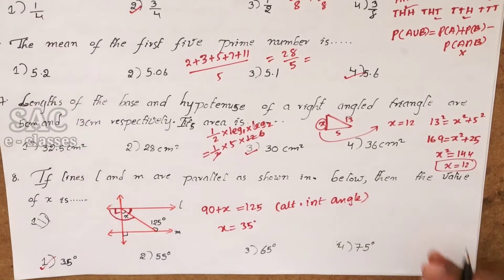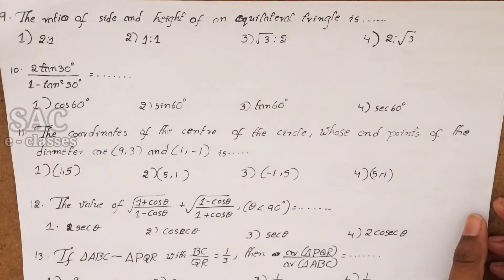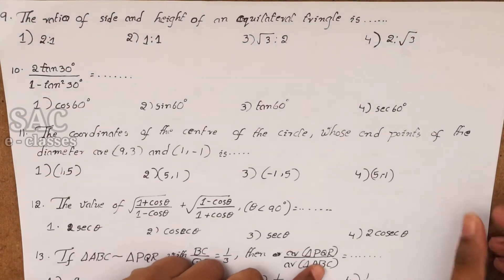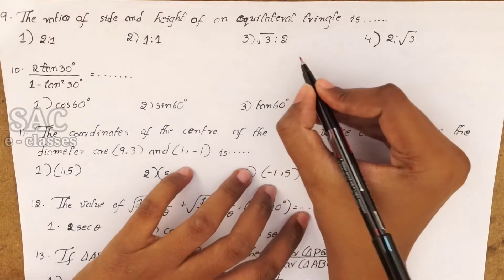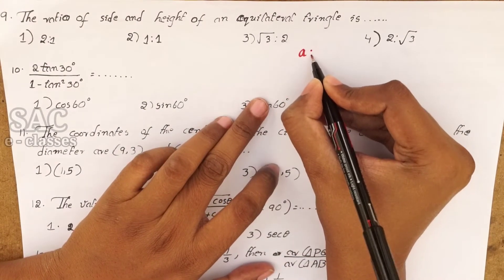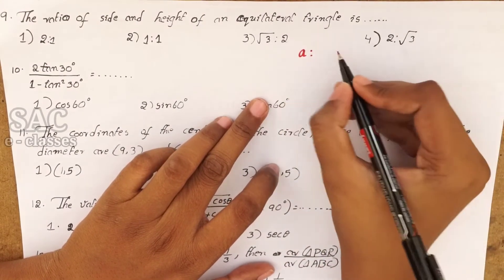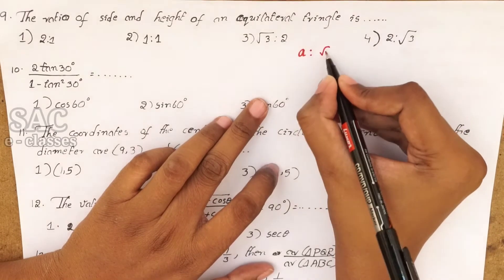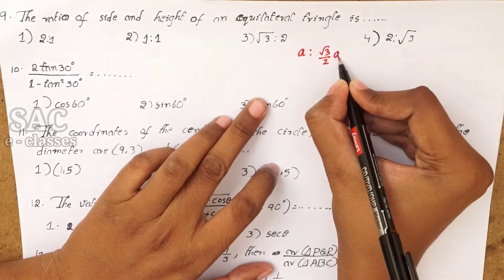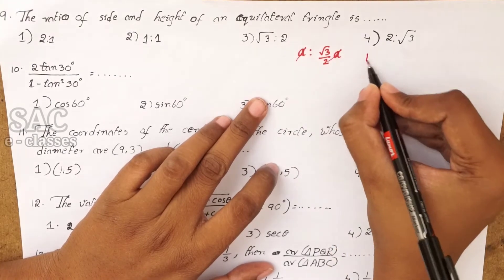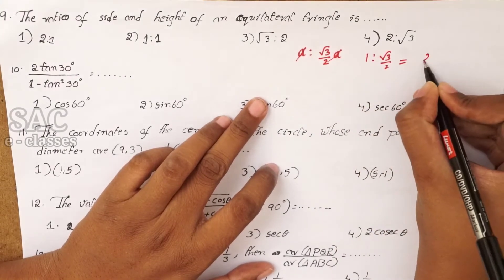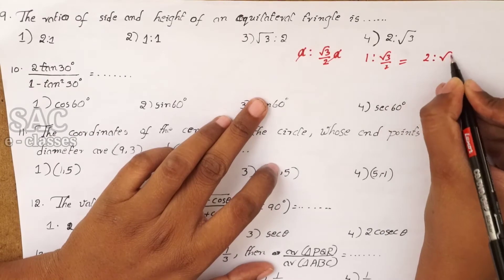The ratio of the side to the height of an equilateral triangle: let the side be A. The height is (√3/2)A. So side : height = A : (√3/2)A = 1 : (√3/2), which simplifies to 2 : √3, or equivalently 2 : 2√3, giving the ratio 2 is to 2√3.